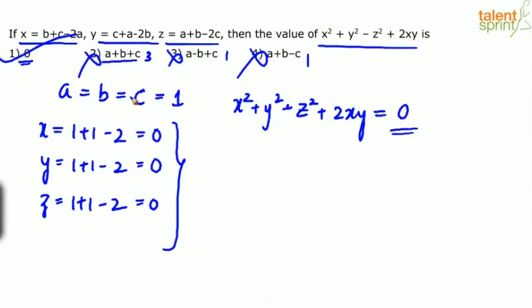Did you see how little time it takes? Less than 10 seconds — believe me. If you do the substitution mentally, you can crack this question in under 10 seconds because there were no conditions. You can also take a equals b equals c equals 0 — nothing wrong with that. Then x, y, z all become 0 as well.